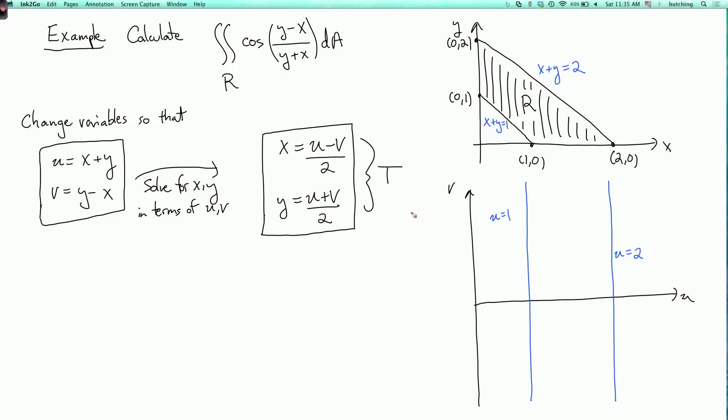Now what about the other two edges? Well, so this horizontal edge, this is where y equals 0. Now y is u plus v over 2.